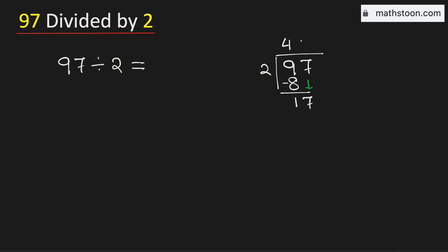We know that 2 times 8 is 16. Subtract, we get 1. Now in this case, 1 is less than 2 and there is no number to bring down here.